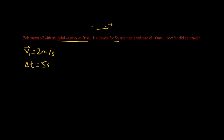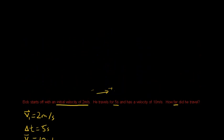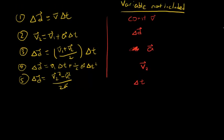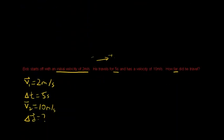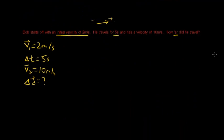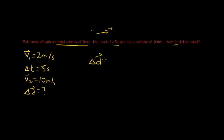After five seconds he has an ending velocity of 10 meters per second. We're asked how far he traveled, so we're solving for displacement. Looking at our chart, equation three has displacement, both velocities, and time — with no acceleration. That's exactly what we need, so we use equation three.